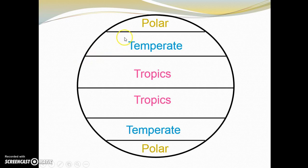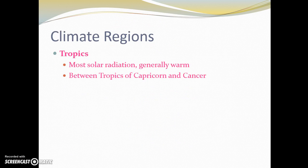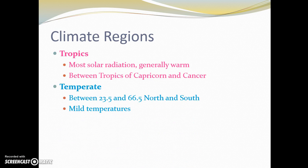So the tropics—those are the places that have the most exposure to sunlight. They generally are very warm, and they are between the tropics of Capricorn and the Tropic of Cancer. In the temperate climate zone, those fall between 23.5 degrees and 66.5 degrees latitude north and south.